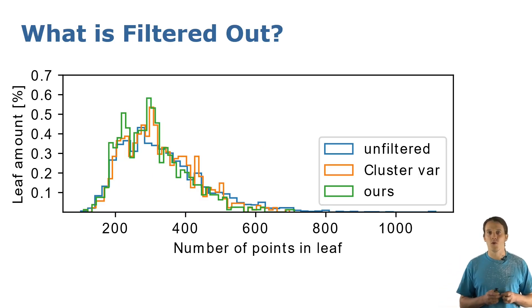Now you might wonder, what is actually filtered out? Are we changing the data distribution substantially by filtering out the uncertain predictions? As you can see in the plot, this is luckily not the case. If you are interested in the quantitative evaluation, please have a look at our paper.